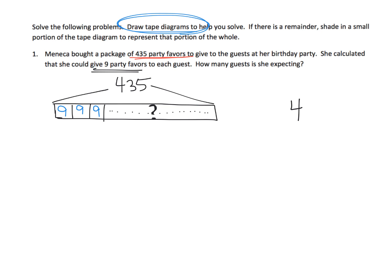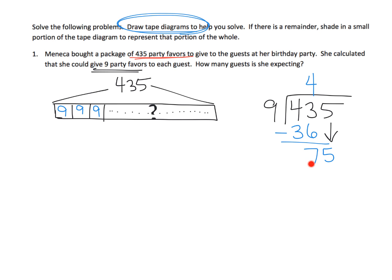So now we can divide: 435 divided by 9. We have 4 hundreds divided amongst 9 groups — you can't do that, so we think about 43 tens divided amongst 9 groups. 43 tens divided amongst 9 groups means there are going to be 4 tens in each group, giving us 36 tens. We subtract and end up with 7 tens left over. Then we bring down that 5, so now we have 75 ones being divided amongst the 9 groups. Each group gets 8 ones, that's 72, and we have 3 units left over. Our answer is 48 with a remainder of 3.